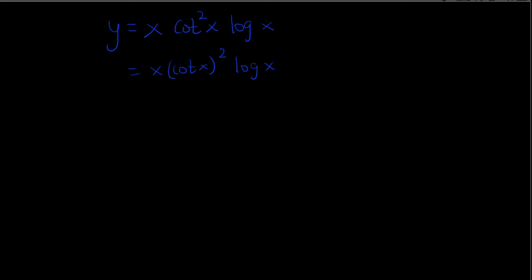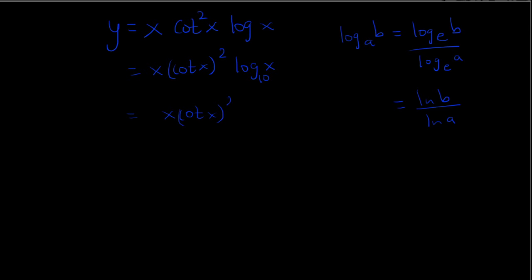This is log base 10 of x, so I'll apply the change of base formula. We put it in base e (natural log), giving us ln(b) / ln(a), or in this case ln(x) / ln(10). Natural log of 10 is just a constant.